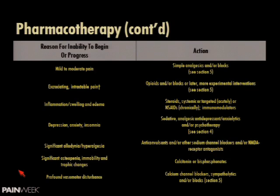Pharmacotherapy: there are no real randomized controlled trials — we're always extrapolating from other diseases. For mild to moderate pain, use simple analgesics; for excruciating intractable pain, you may use stronger medications like opioids. For inflammation, anti-inflammatories like steroids or non-steroidals. For depression, anxiety, and insomnia — sedative, analgesic antidepressants and anxiolytics. For significant allodynia — anticonvulsants and sodium channel blockers. For significant osteopenia or dystrophic changes — salmon calcitonin. For profound vasomotor disturbance — you may use blocks and calcium channel blockers.